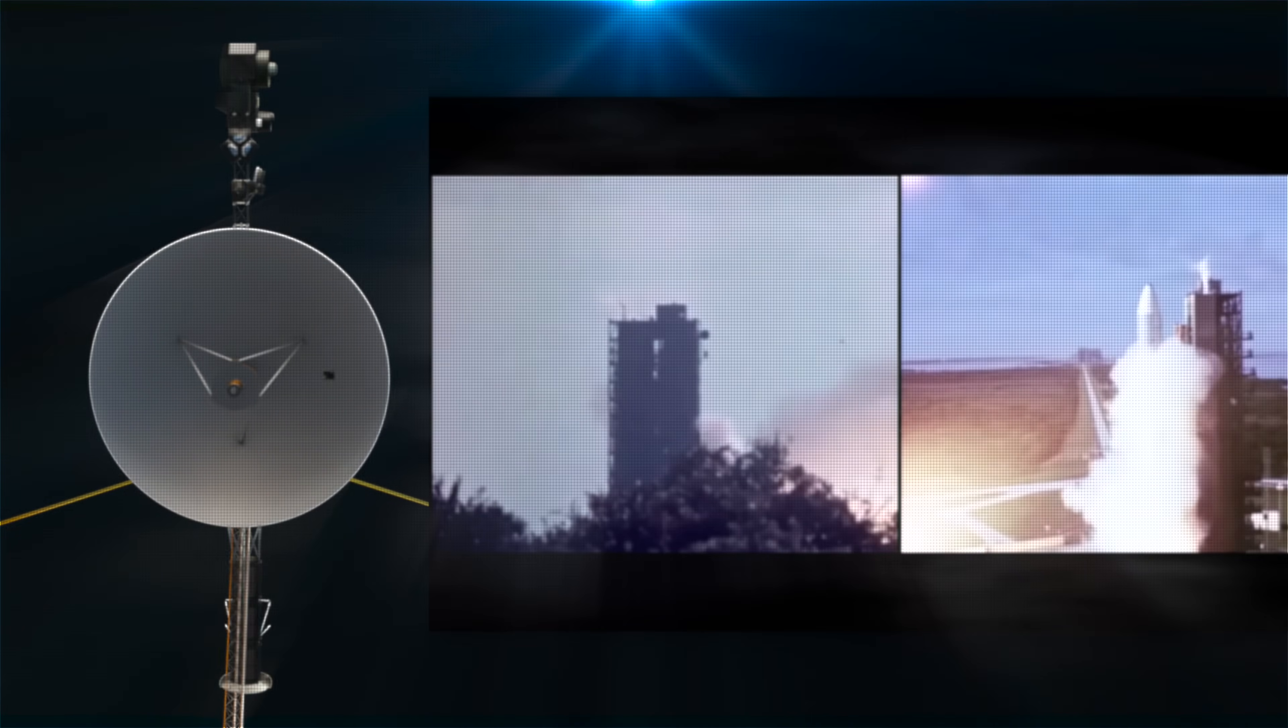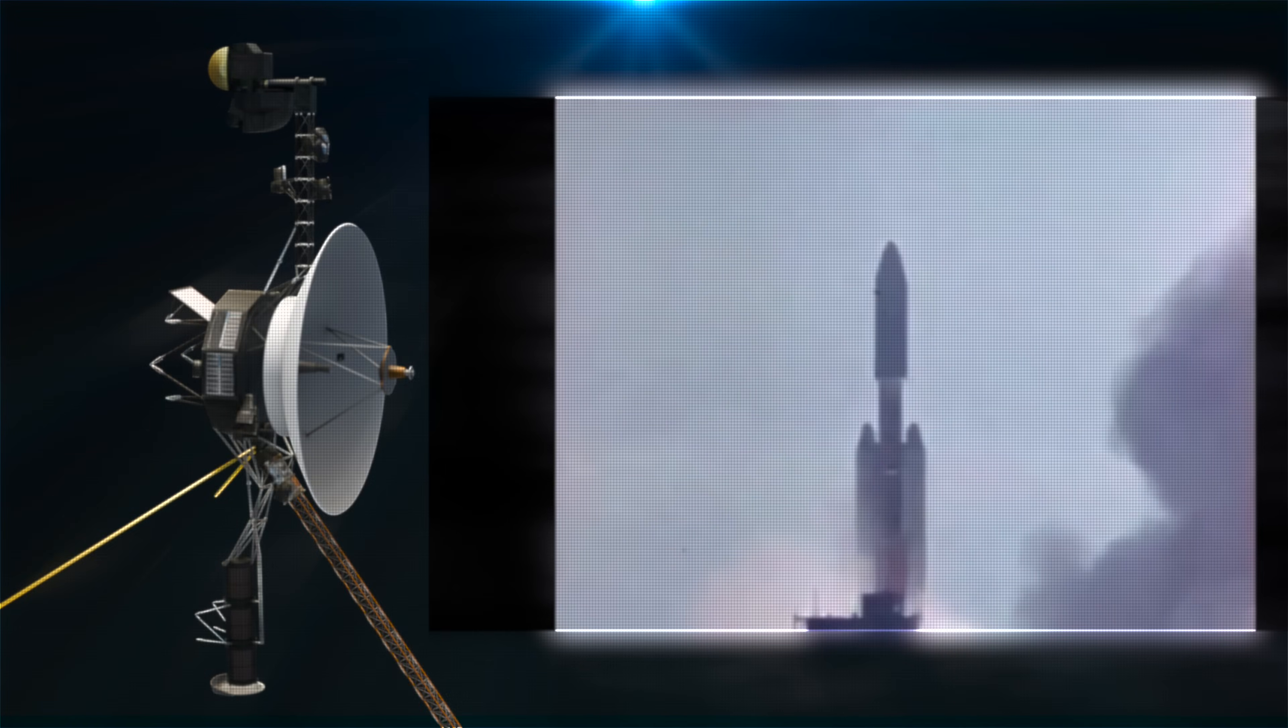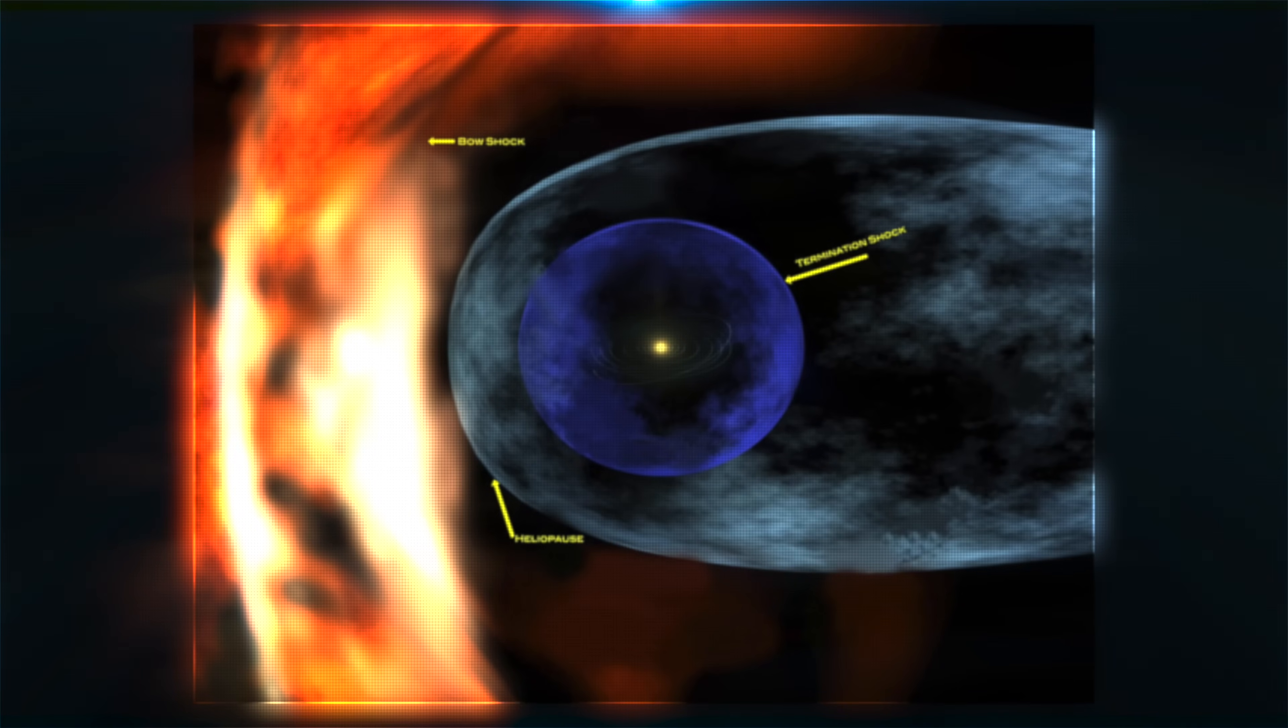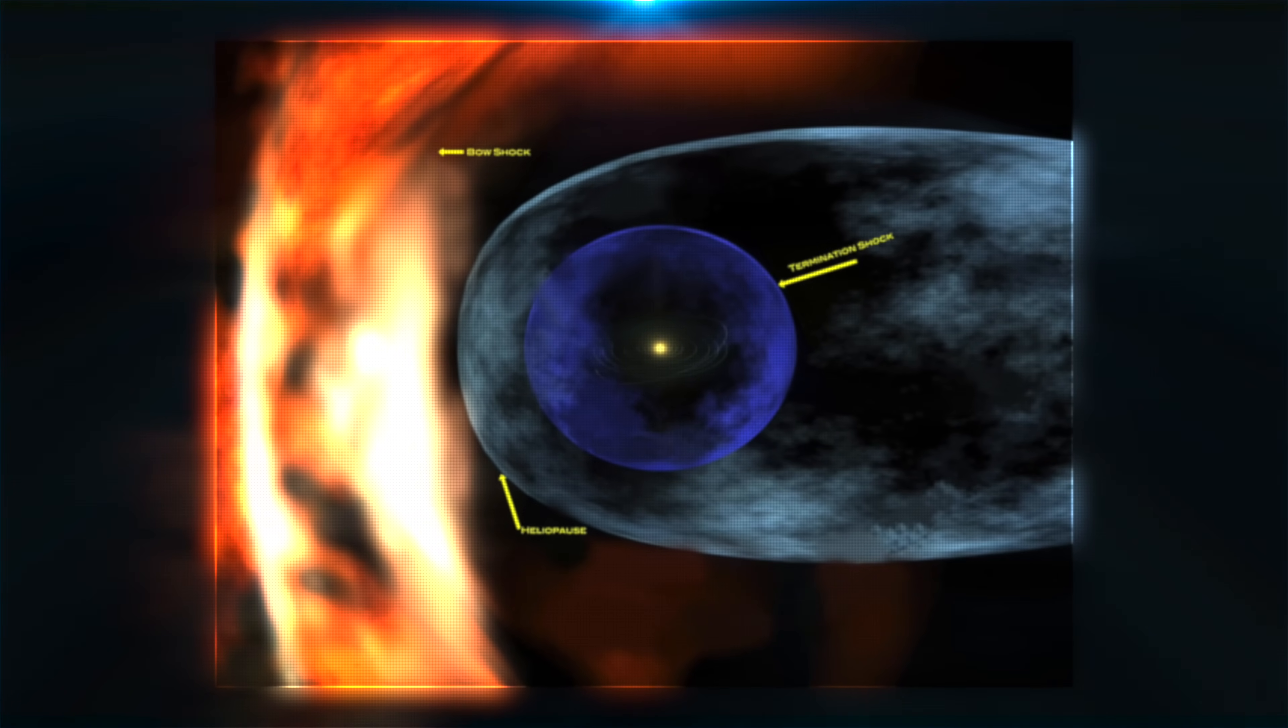The Voyager 1, part of the Voyager program, was launched by NASA September 5th, 1977, with the mission goal of studying the outer solar system and interstellar space beyond the Sun's heliosphere.